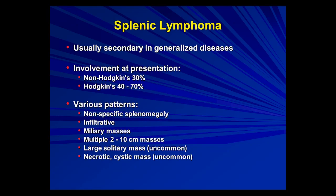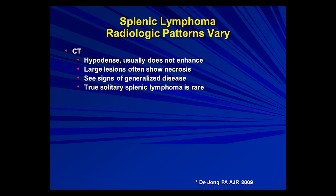Primary splenic lymphoma is extremely rare — defined as lymphoma involving only the spleen and the node at the hilum. Most lymphoma in the spleen is part of generalized disease. It can have a variety of patterns: nonspecific splenomegaly, an infiltrative pattern, small miliary masses resembling the micro-abscess pattern, multiple large varying-size masses, a single large solitary mass, or a large necrotic mass. The imaging varies — usually hypodense, usually does not enhance. Large lesions show necrosis. You'd expect to see adenopathy elsewhere either clinically or on imaging.